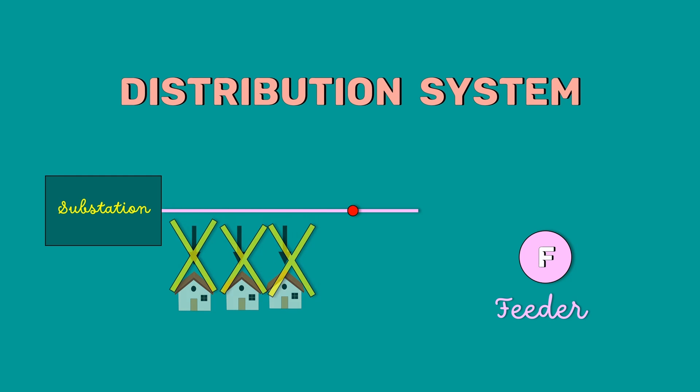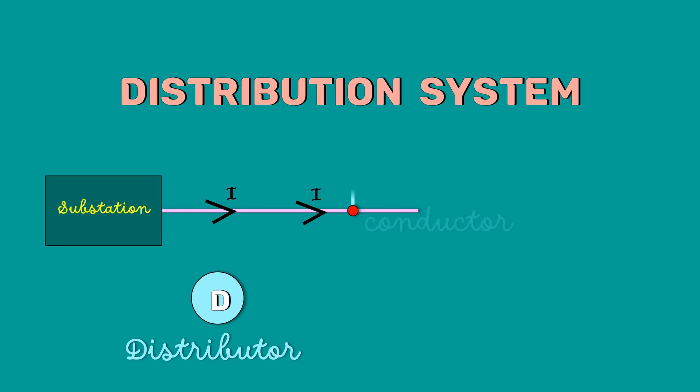The distribution system has feeders and distributors. A feeder is a conductor which connects the substation to the area where the power is to be distributed. Generally, no tappings are taken from the feeder so that the current in it remains the same. A distributor is a conductor from which tappings are taken for supply to consumers.